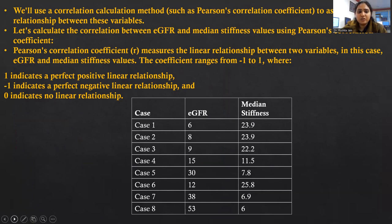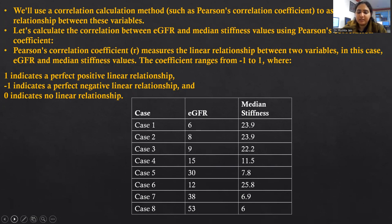Pearson's correlation coefficient (r) measures the linear relationship between two variables — in this case, eGFR and median stiffness values. The coefficient ranges from minus one to one, where one indicates a perfect positive linear relationship, minus one indicates a perfect negative linear relationship, and zero indicates no linear relationship. I have taken eight cases with their eGFR values and corresponding median stiffness.